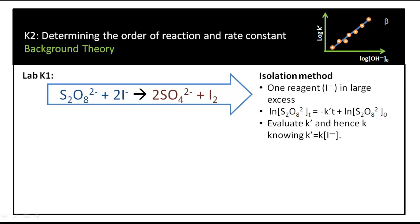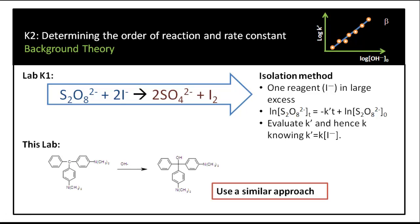Once we know the pseudo first order rate constant k-prime, we can determine k, the true second order rate constant, knowing that k-prime equals k times the iodide concentration. We are going to use the same approach in this lab, where malachite green reacts with hydroxyl ions to form product. We will put hydroxyl ions in vast excess and assume pseudo first order conditions.